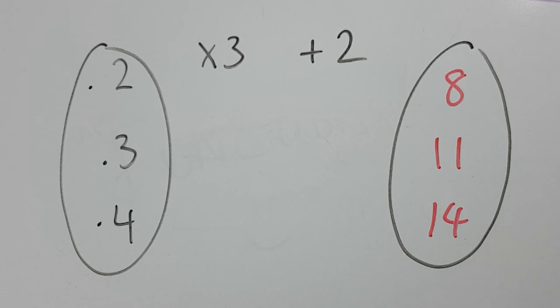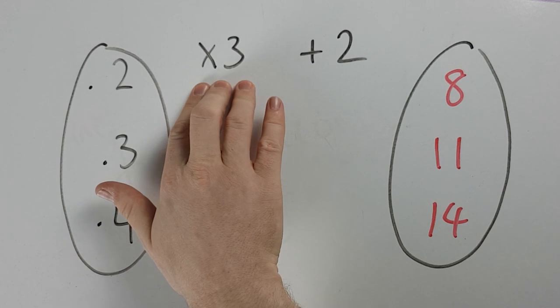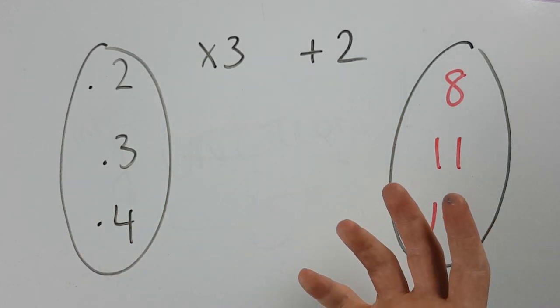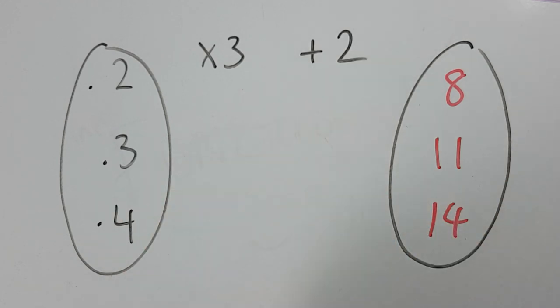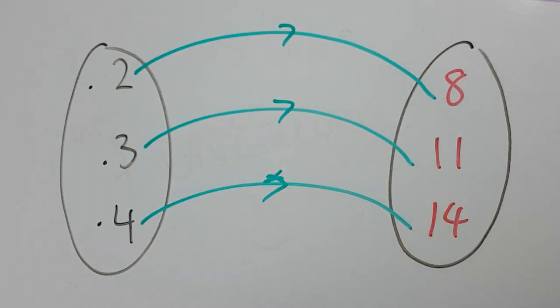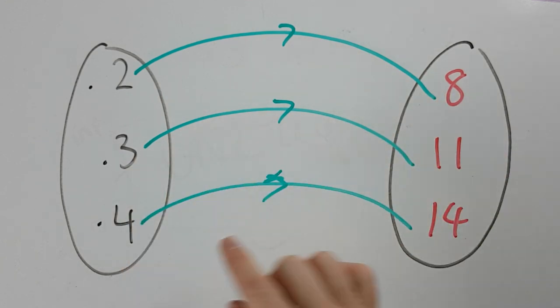So what you can see here is we had an input of numbers and we had an output, and we performed something on them. We multiplied by 3 and then we added 2. We performed a function. So the function of this particular thing here was to take a number, multiply it by 3, and add 2. If you input the number 2, you get the number 8. If you input the number 3, you get the number 11. If you input the number 4, you get the number 14.